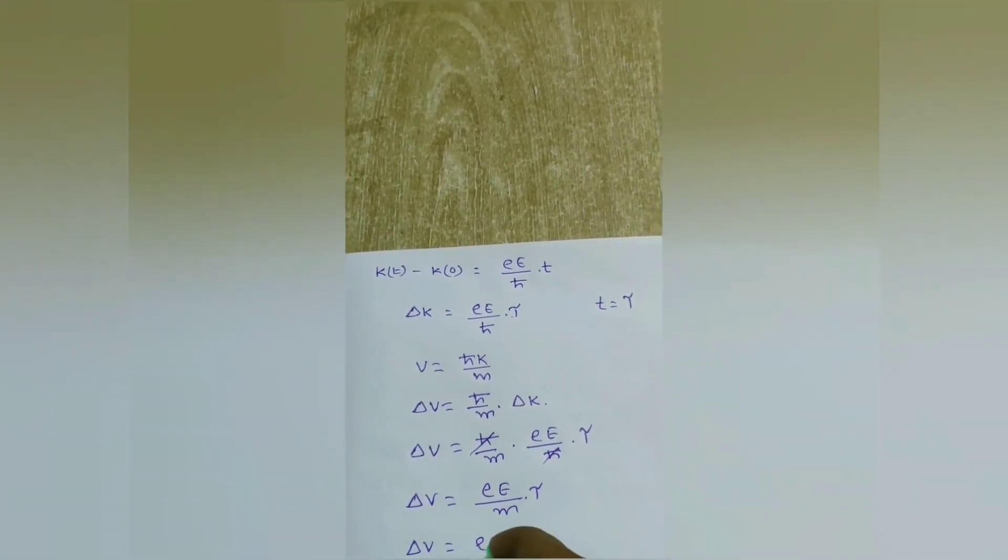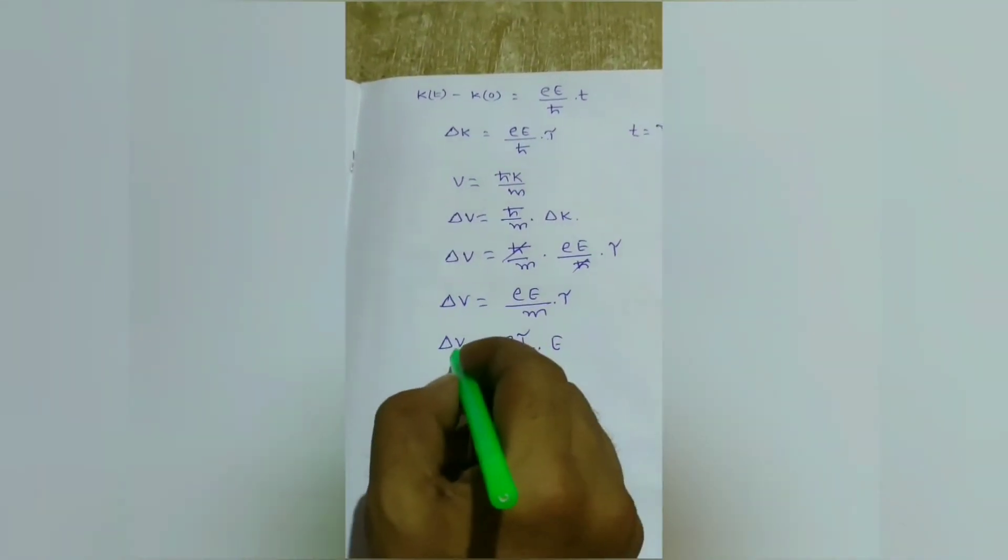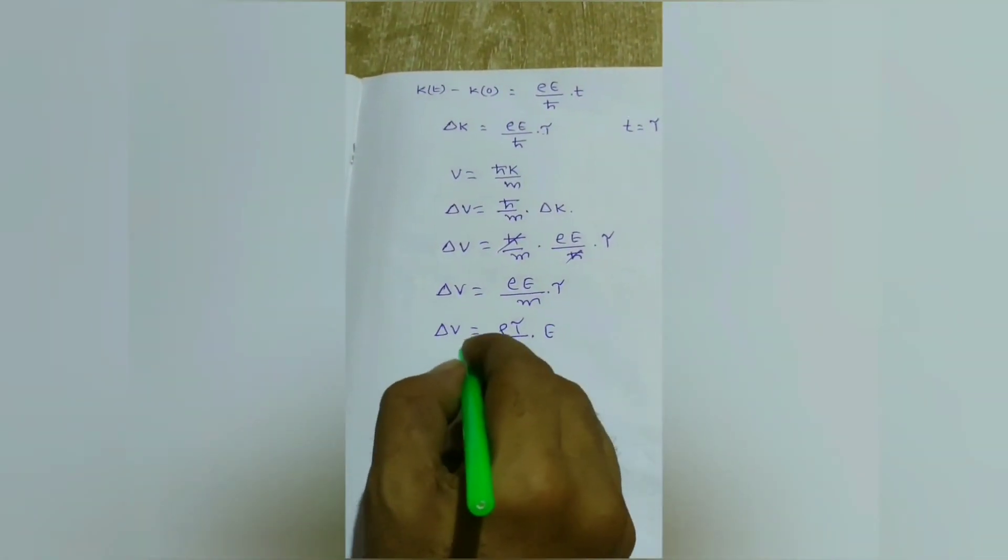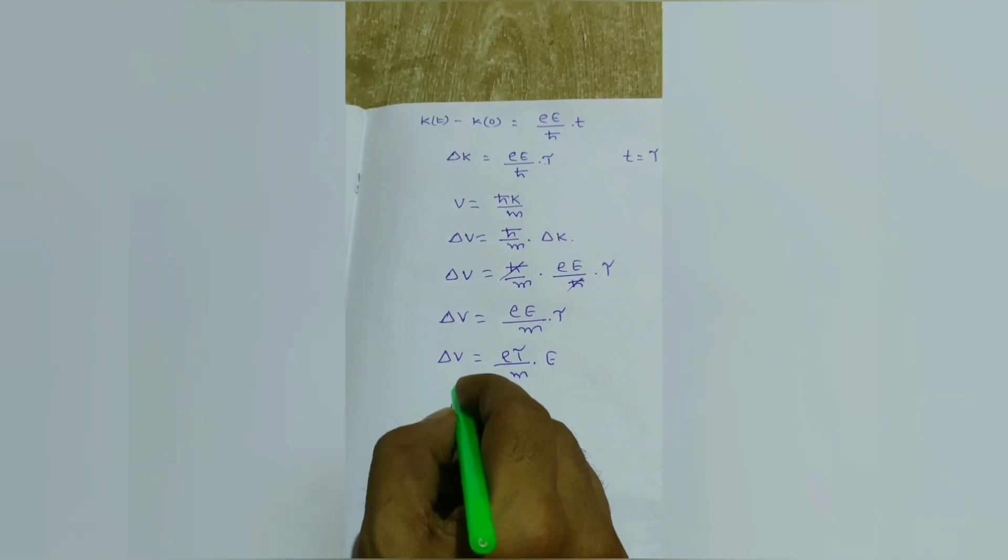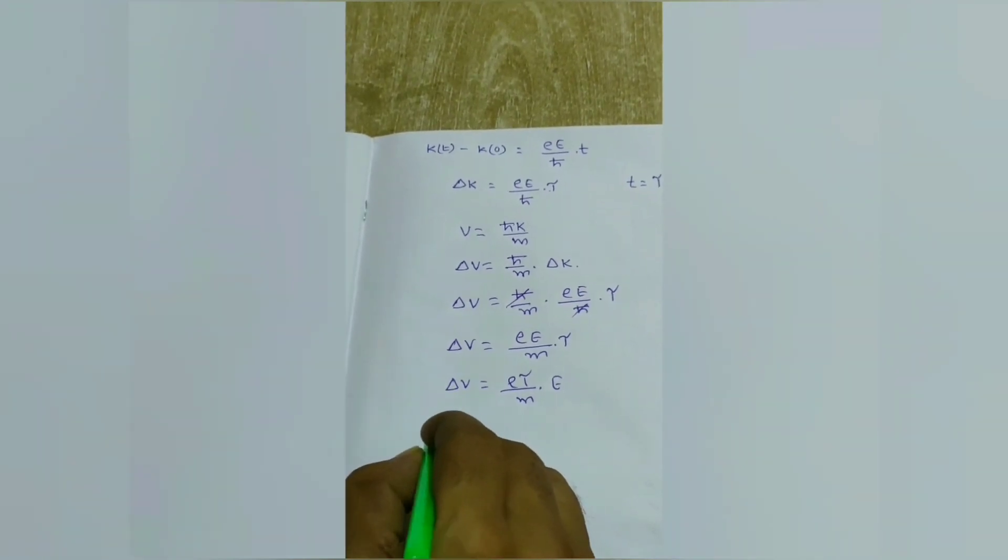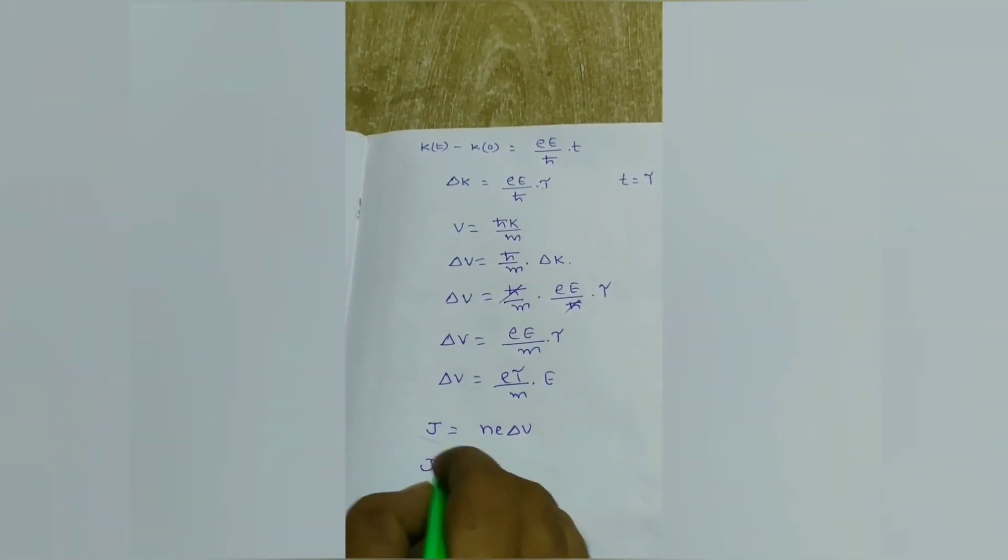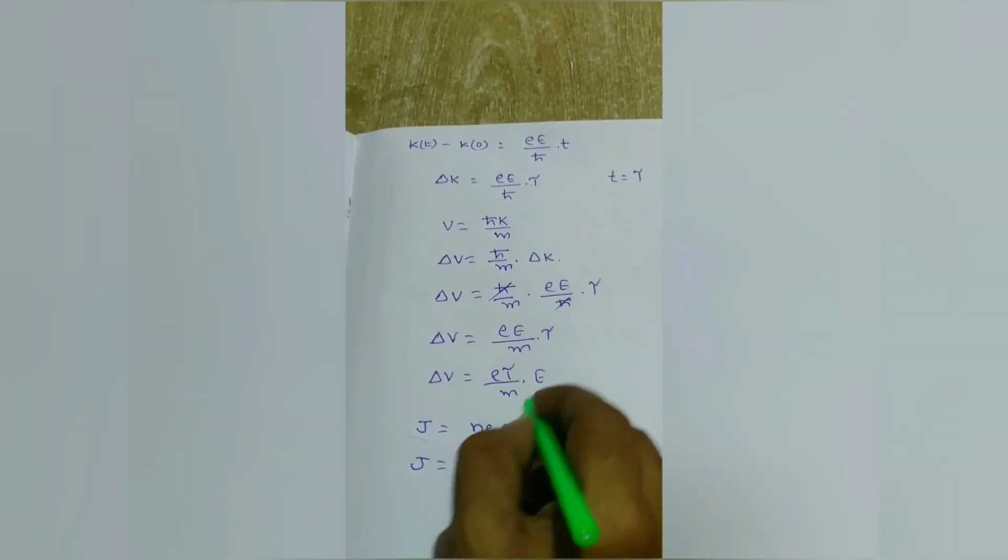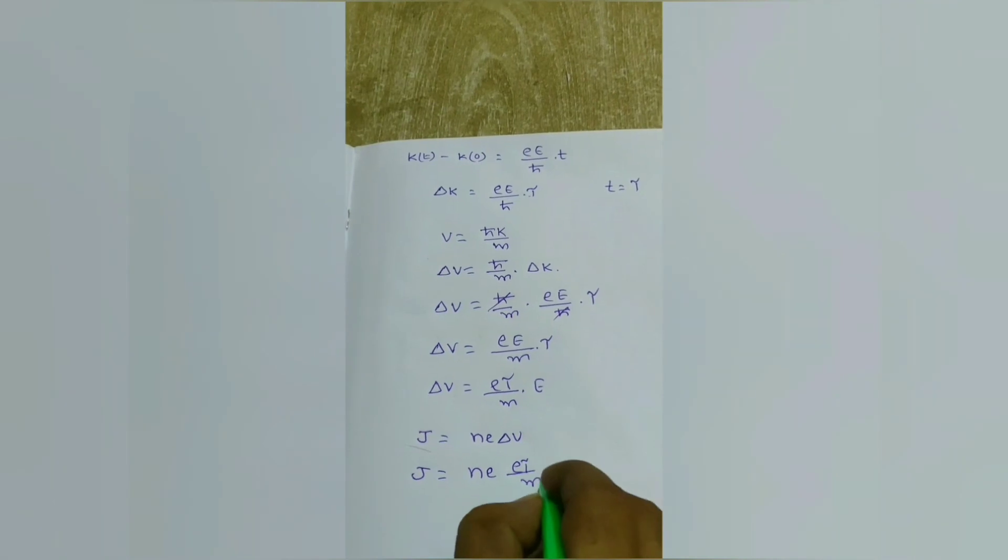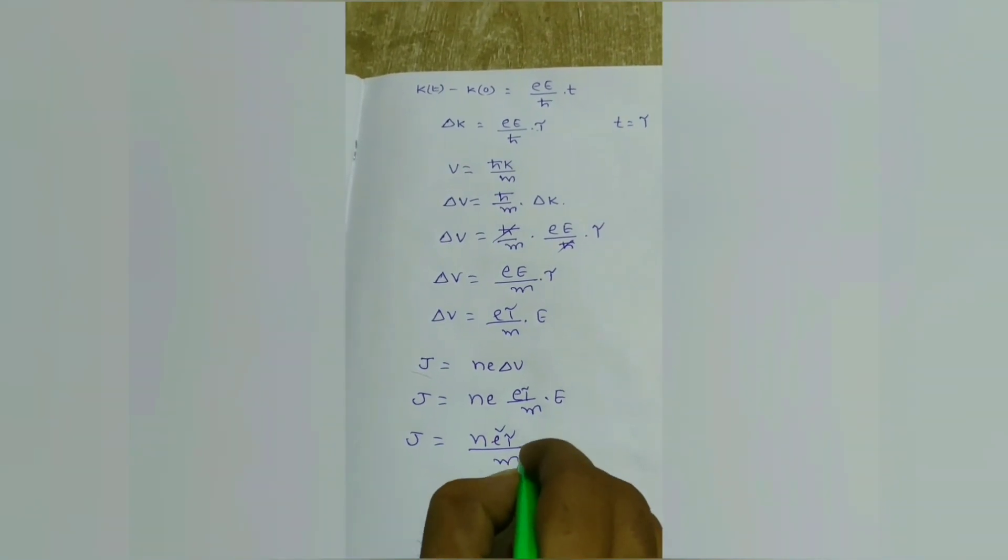Δv = (eτ/m)E. From this equation, Δv is known as average velocity. With this average velocity, we calculate current density in terms of average velocity. Therefore, current density j = neΔv. Then j = ne × (eτ/m)E. j = (ne²τ/m)E.